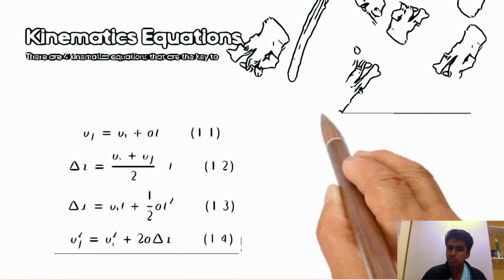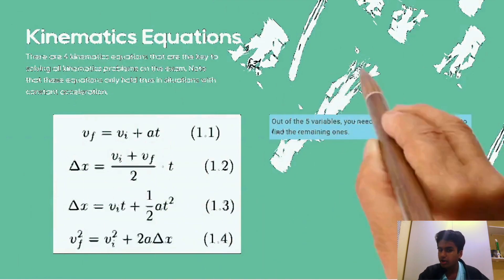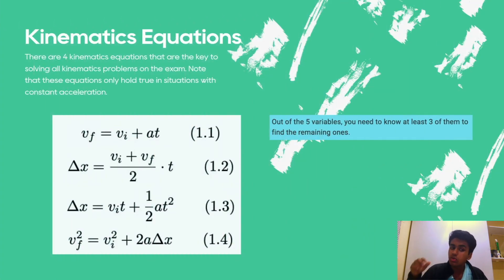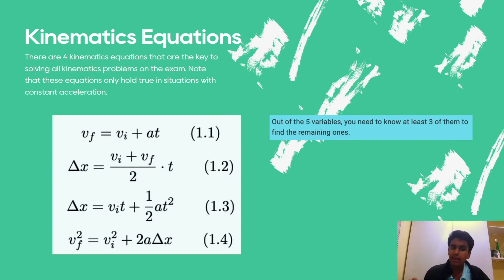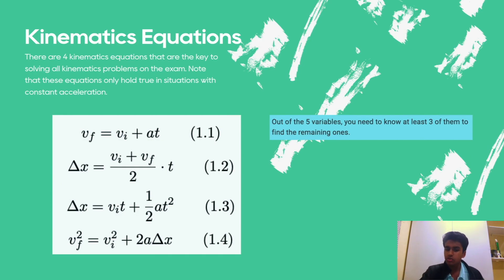Now it's time for the most important part of this unit: the kinematics equations. These four equations are true at constant acceleration. The first is: final velocity equals initial velocity plus acceleration times time. The second is: delta x equals initial velocity plus final velocity over 2, times time. The third is: displacement equals initial velocity times time plus one half at squared. The fourth is: final velocity squared equals initial velocity squared plus 2 times acceleration times displacement. There are five variables used throughout all four equations, and if you know at least three of them, you can solve for the rest.